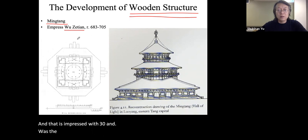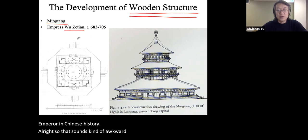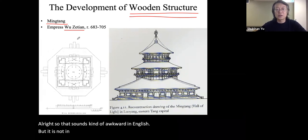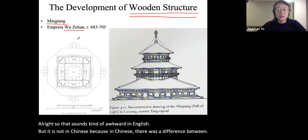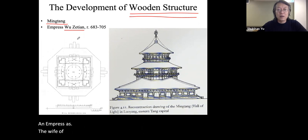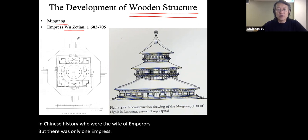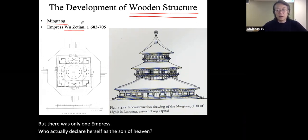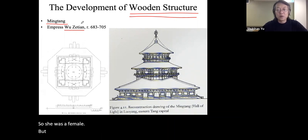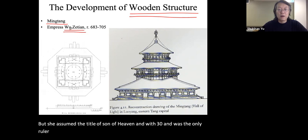Empress Wu was the only female emperor in Chinese history. In Chinese there is a distinction between an empress as the wife of an emperor and an empress who actually ruled the country. There were numerous empresses in Chinese history who were wives of emperors, but there was only one who declared herself as the Son of Heaven—and Wu Zetian was that only empress who did so.